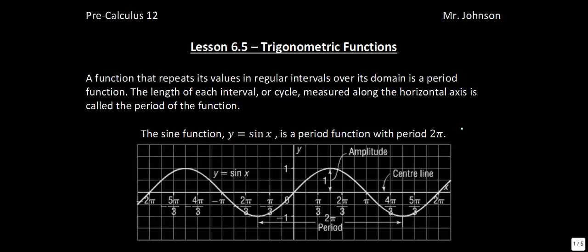You can take any two corresponding points to find the period. For instance, if you take this minimum point and the next minimum point, those are corresponding points and the distance between them is our period. Looking at the distance between those two points, it would be 2π. Taking the maximum point and the next corresponding maximum also gives 2π.